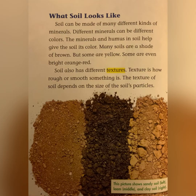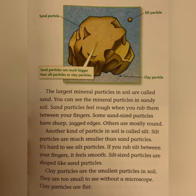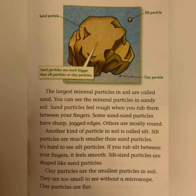The texture of soil depends on the size of the soil's particles. The largest mineral particles in soil are called sand. You can see the mineral particles in sandy soil. Sand particles feel rough when you rub them between your fingers. Some sand-sized particles have sharp, jagged edges; others are mostly round. Another kind of particle in soil is called silt. Silt particles are much smaller than sand particles. It's hard to see silt particles. If you rub silt between your fingers, it feels smooth. Silt-sized particles are shaped like sand particles.